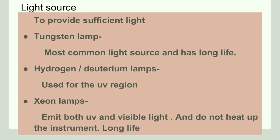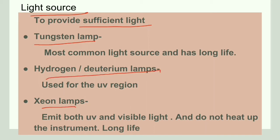The first component is the light source, which provides sufficient light for the instrument. It can be of different types: tungsten lamps, hydrogen or deuterium lamps, or ion lamps. Tungsten lamps are most commonly used and have a long life. Hydrogen or deuterium lamps are used for the UV region. Ion lamps are used to emit both UV and visible regions.